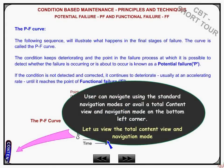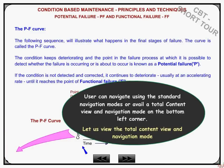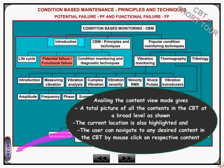You can navigate using the standard navigation modes, or click the total content view and navigation mode on the bottom left-hand corner. Clicking the content view mode gives the total picture of all the contents in the computer-based training at a broad level. The current location is also highlighted, and the user can navigate to any desired content by mouse-clicking on the respective content.